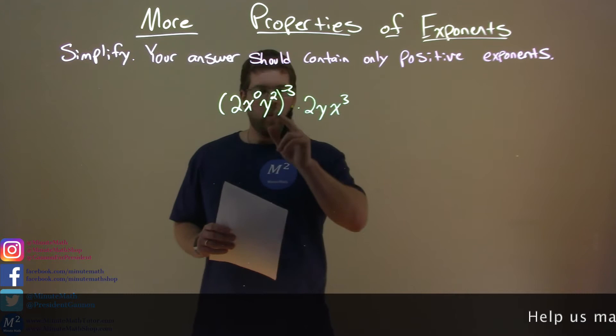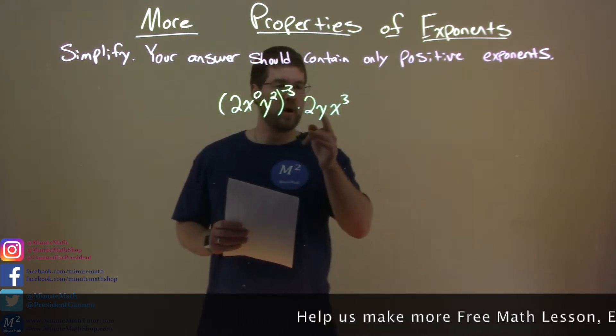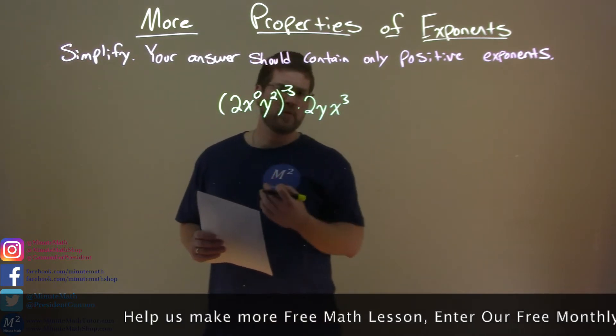2x to the zero power y squared all to the negative third power times 2yx to the third power. What do we need to do from here?